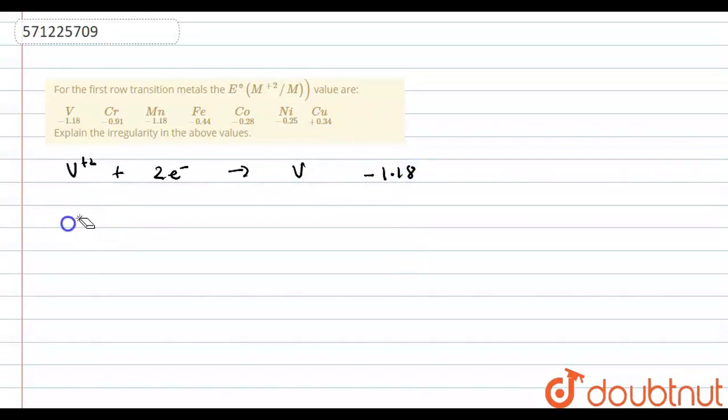Now, if we look closely to the electronic configuration of V+2, what will it be? For vanadium, the electronic configuration is, since its atomic number is 23, we can write its configuration as argon and we have 4s2. Till argon, we have filled 18 electrons, plus to that we have filled almost 20 electrons and then we are filling three more electrons in 3d3.